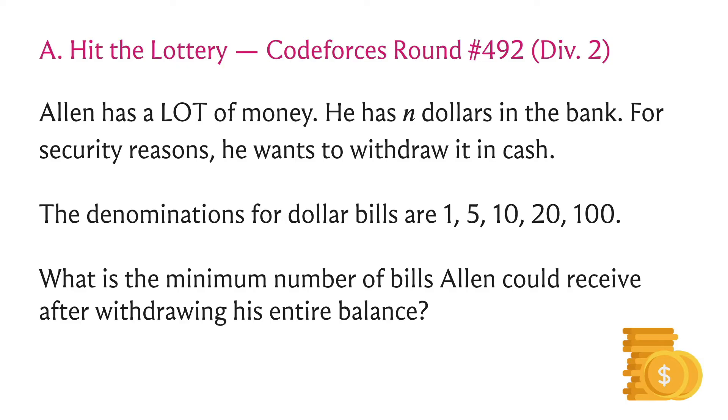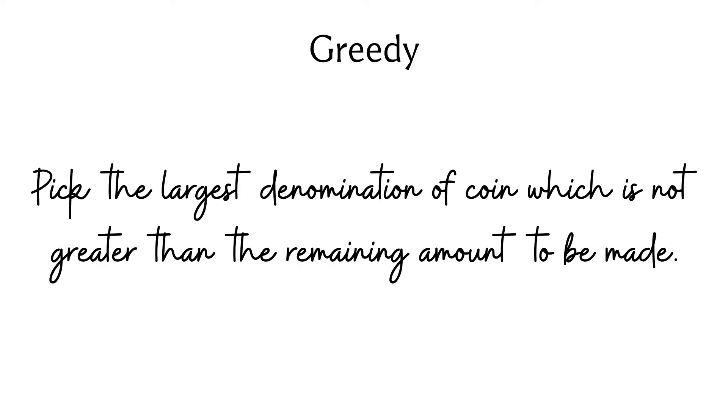The natural greedy thing to do would probably be to use the largest bill that you can possibly use to knock out as much of your remaining task as possible. So remember you're trying to generate n dollars—for instance, if n is greater than 100 then I'll probably reach out to a hundred dollar bill first because that gives me the maximum leverage. It's only when the remaining amount that I have to generate falls below 100 that I will stop using the hundred dollar bills and turn to the next largest denomination that I can use, and so on and so forth. So let's write out the overall strategy. You want to pick the largest denomination of coin which is not greater than the remaining amount to be made at every stage of this algorithm, and of course you stop once you have generated the entire amount that you were supposed to generate.